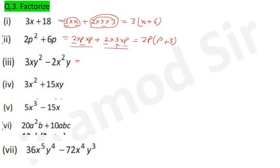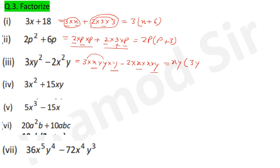Question 3: 3xy² − 2x²y. Factorize: 3×x×y×y − 2×x×x×y. What is common: x and y. Take xy as common; left is 3y from the first term and 2x from the second. Answer: xy(3y − 2x).